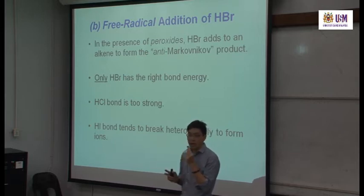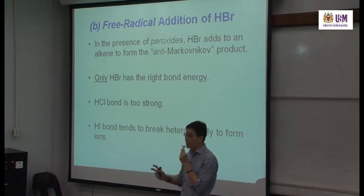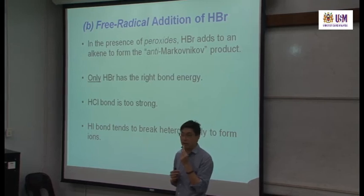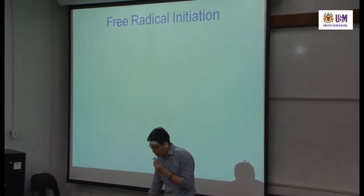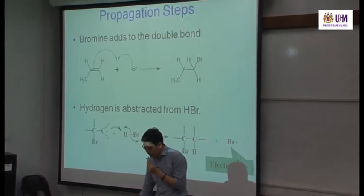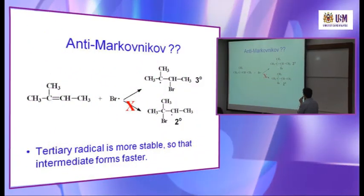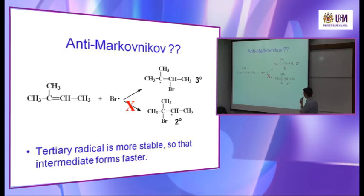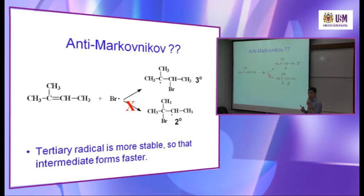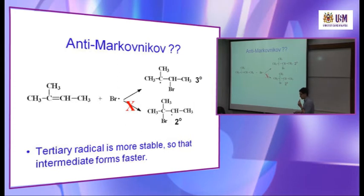If you are only using HBr in a different solvent, maybe using alcohol as a solvent, the result is different. So you have to pay attention whether it's a radical reaction or it's an electrophilic addition reaction. There are two reactions using the same reagent. This is the free radical mechanism we have gone through already. In this case the tertiary radical is more stable than the secondary radical, so the Br will be attached to the less substituted carbon, and the H will be added to the more substituted carbon. That's why the product yield is an anti-Markovnikov product. Markovnikov means the H is added to the carbon which has more H. So this is an anti-Markovnikov product.